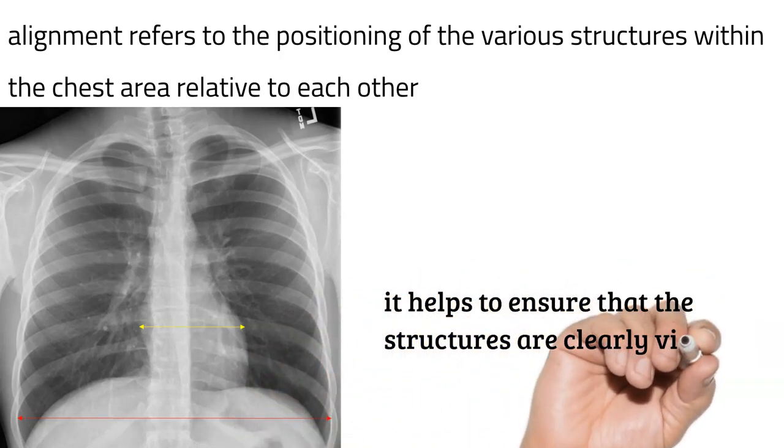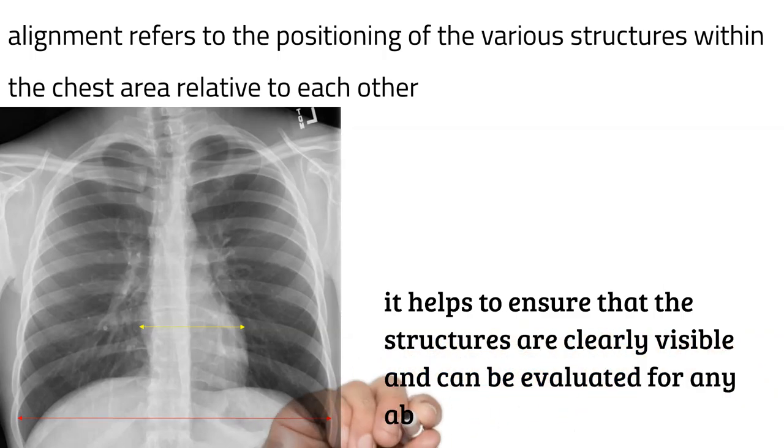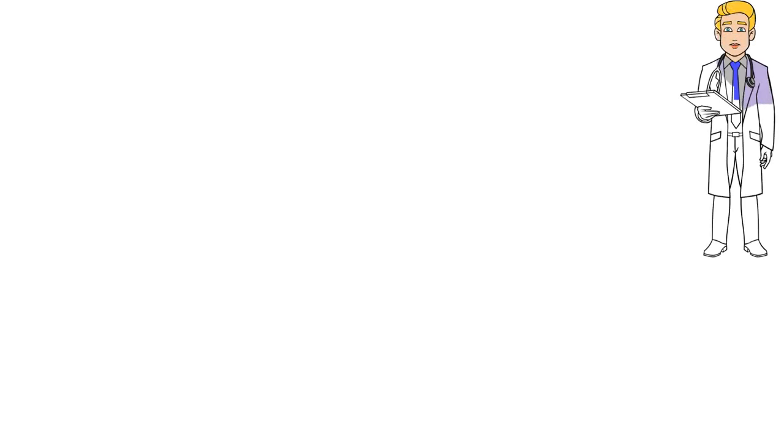It helps to ensure that the structures are clearly visible and can be evaluated for any abnormalities. There are several key elements of alignment that radiologists and other healthcare professionals look for when interpreting a chest x-ray, including: